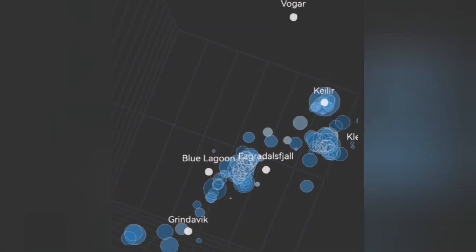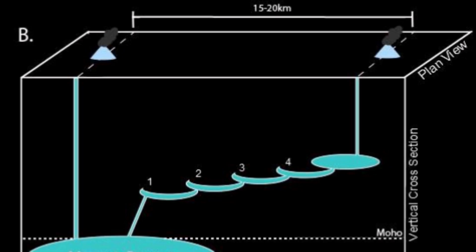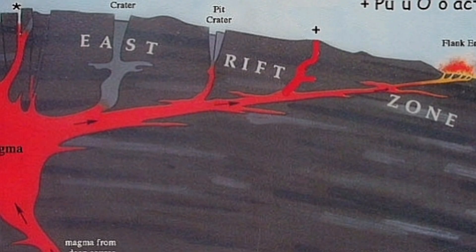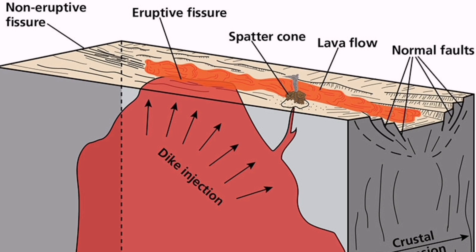This is the diagram or cartoon showing what I mean by this transgressive sill moving from Svartsengi at an angle toward the town of Grindavik, the vicinity, north part of it. You can see in this cartoon the same.